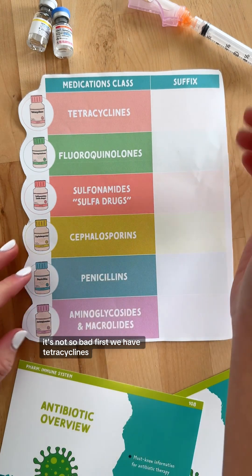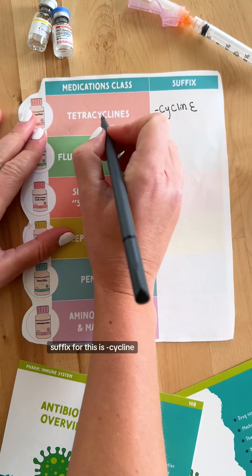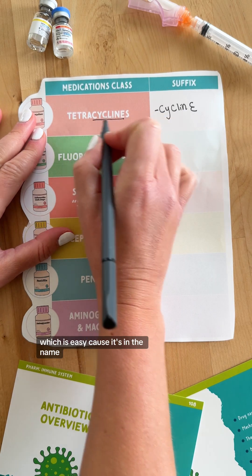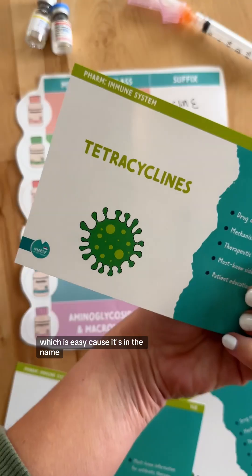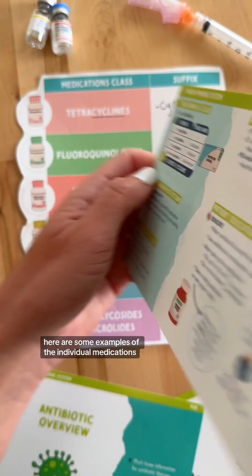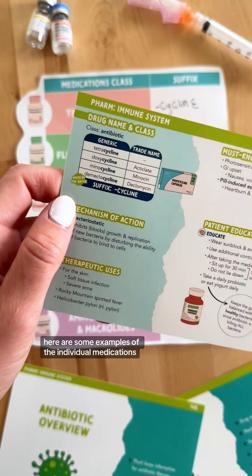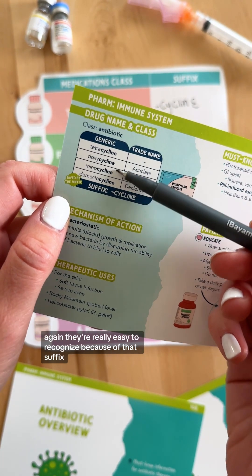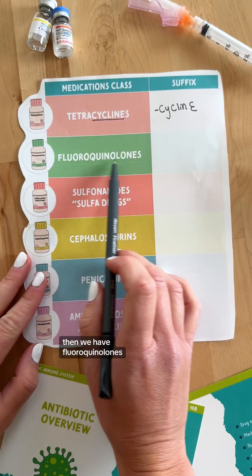First, we have tetracyclines. The suffix for this is -cycline, which is easy because it's in the name. Here are some examples of the individual medications. They're really easy to recognize because of that suffix.